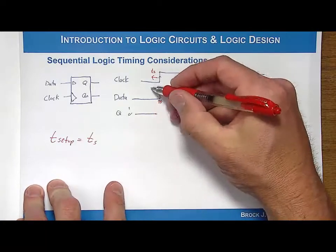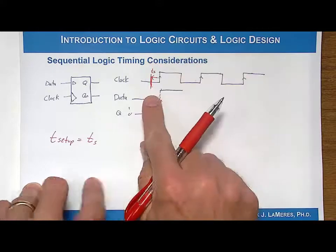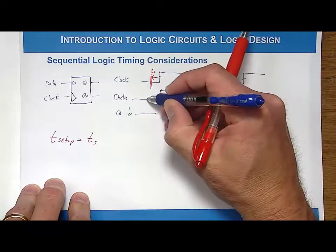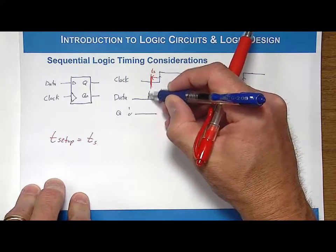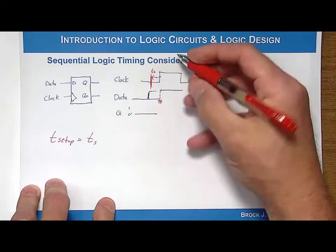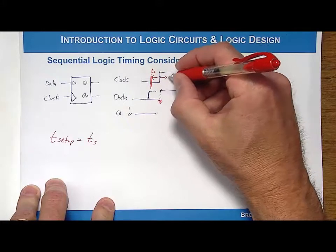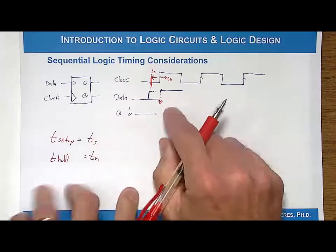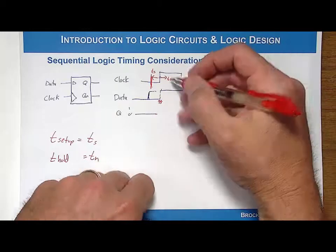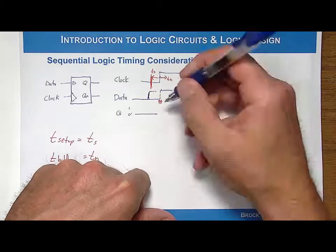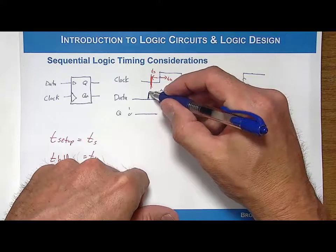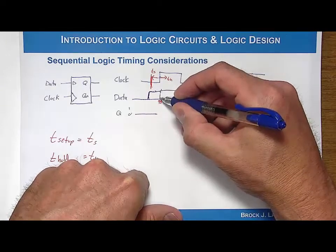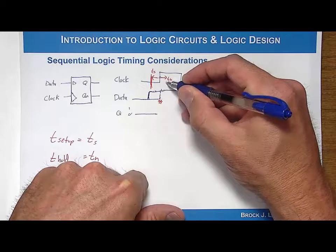The first one is called the setup time — T_setup, or T_s. The setup time is the amount of time before the clock edge that the data has to be stable. So if I was going to transition this data to a one, I would have had to do it at least one setup time before the clock. Then the second one is the hold time — T_hold, or T_h. The hold time is the amount of time after the clock edge that you need to hold the data before you can transition again.